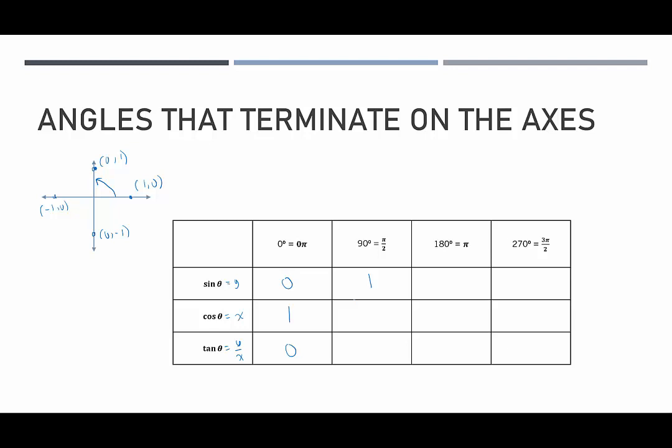Cosine of 90 degrees will be equivalent to the x-coordinate, which is 0. And tangent will be y over x, or it will be sine over cosine. 1 over 0 is undefined. We can't divide by 0, so we say it's undefined. So there's no tangent at 90 degrees.